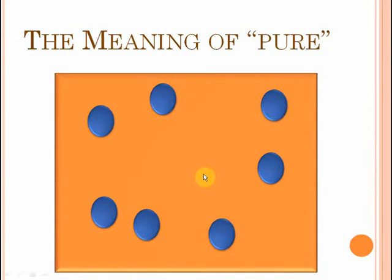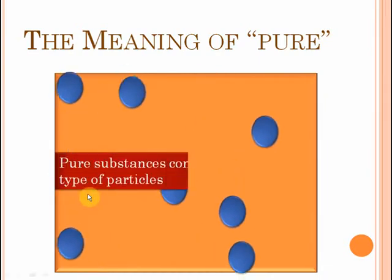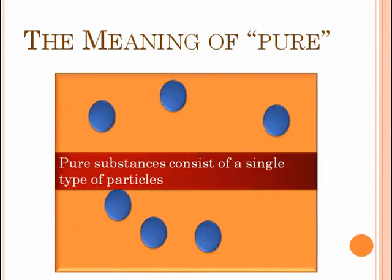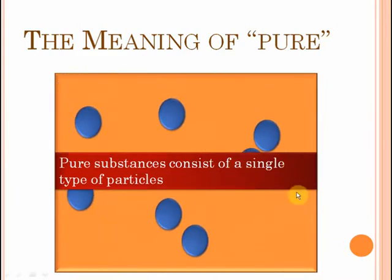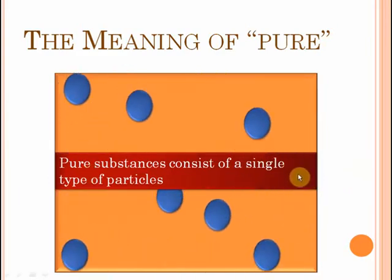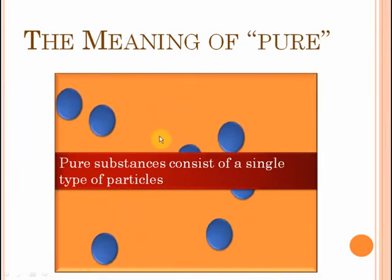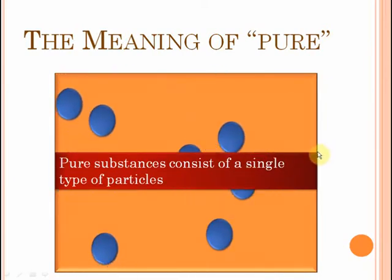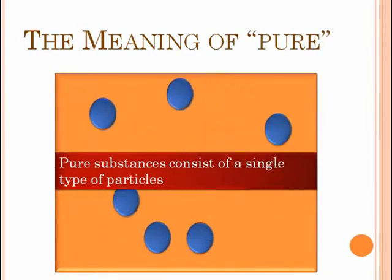Before we understand mixtures, let's understand what the word pure means. Simply put, a pure substance will consist of a single type of particles. So for example, this substance whose particles you can see moving on your screen — it's a pure substance, because it consists of only one type of blue particles. There are no other types of particles. So all pure substances contain only one single type of particles.